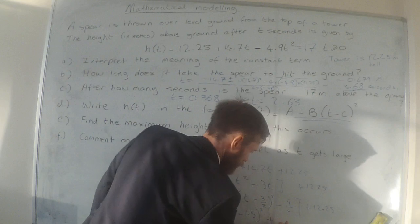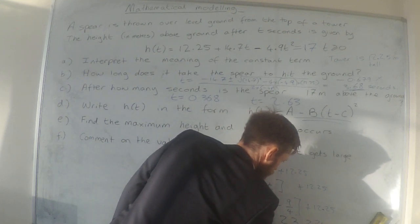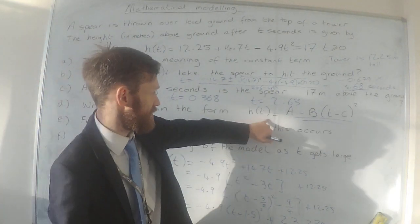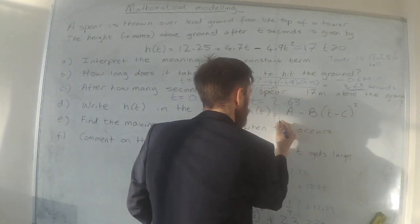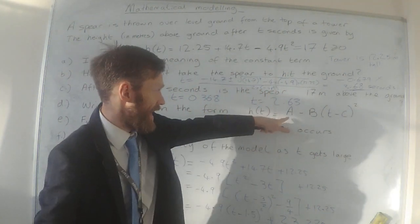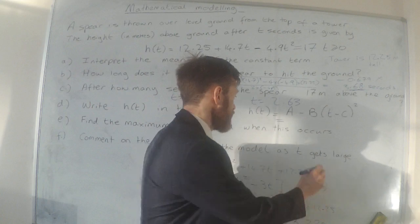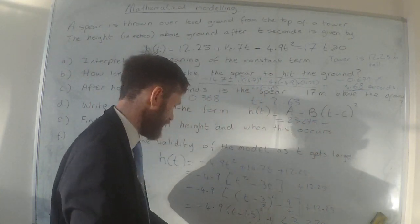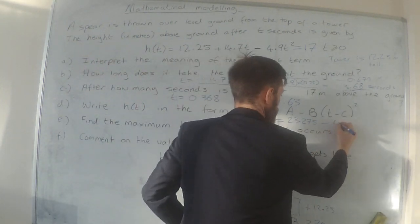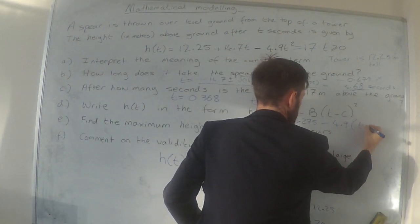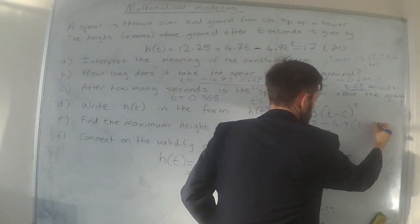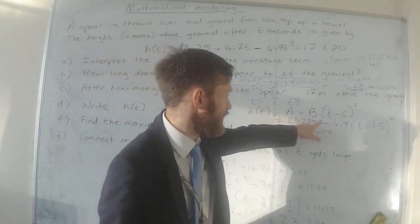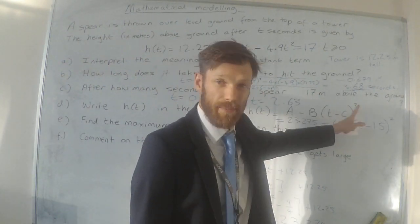So I've completed the square. So in the context of this form, A is 23.275, B is 4.9, and then I've got t - 1.5. There we go, I've written it in this form. So when you see something like this, it means complete the square.